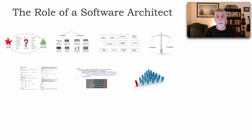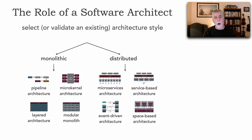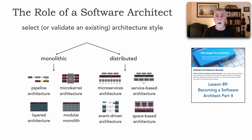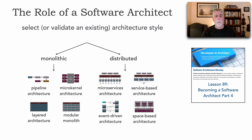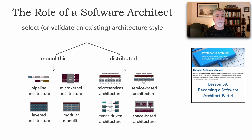Another thing an architect does is select an architecture style, or really validate the existing architecture style. We look at all these various architecture styles — lesson 89, part 4 of becoming a software architect, covers these in depth, and we devoted a chapter in our book Fundamentals of Software Architecture to each of them. Even if you don't do new applications, this is still a role of the architect: do you have the right architecture style in place? It may have been valid five years ago, but business changes, technology changes, environments may move to cloud, and it may no longer be the right style. So it's this constant validation.